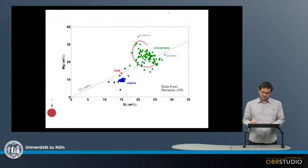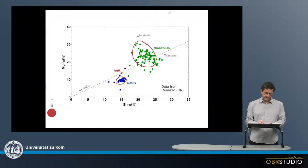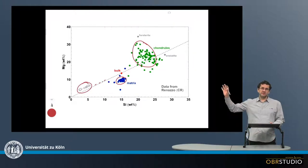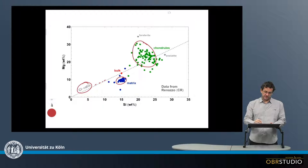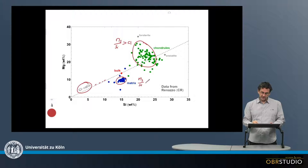So the chondrules are up here and the matrix is down here. By up here and down here I mean relative to the CI chondrite magnesium-silicon ratio. The CI ratio is this dashed line here. The chondrules have magnesium-silicon ratios that are higher than the CI ratio, whereas the matrix has magnesium-silicon ratios that are lower than the CI ratio.